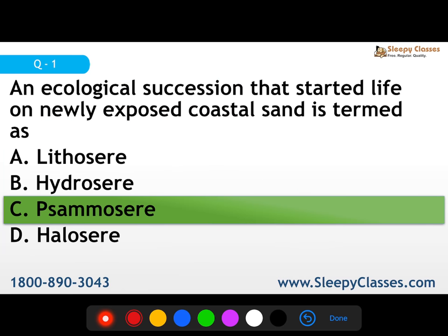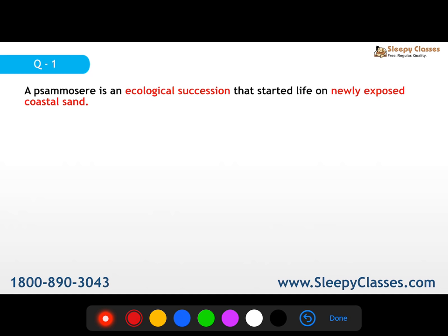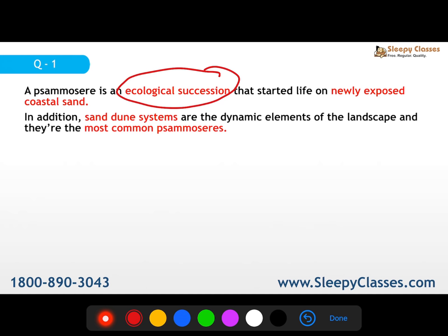What we call ecosphere is the development of vegetation in an era. Now, if we talk about psammosere, it is an ecological succession on newly exposed coastal sand. The sand dunes are the most common example of psammosere, and what defines their growth is the interrelationship between the sand and the vegetation.